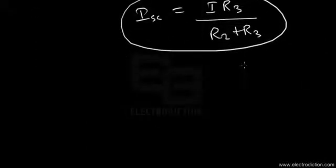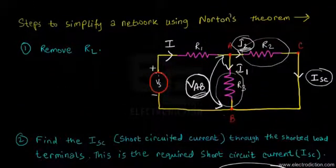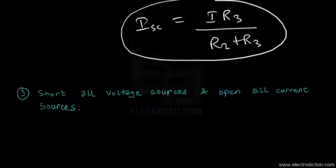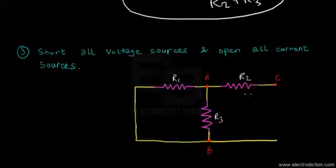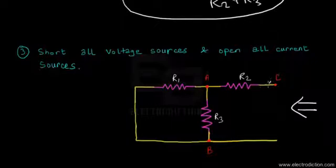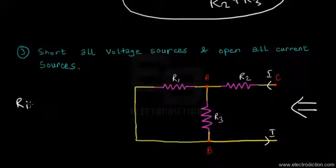Step three: short all voltage sources and open all current sources. In this network, there is only one voltage source V_S and no current sources, so we simply short V_S. With the modified network, we look from the open terminals C and B and imagine current entering through terminal C and leaving through B to find the equivalent internal resistance.